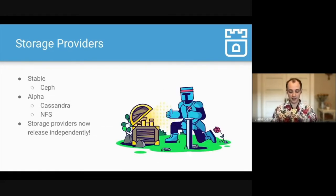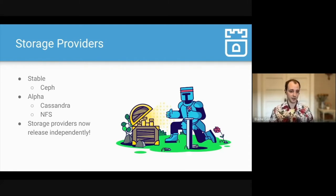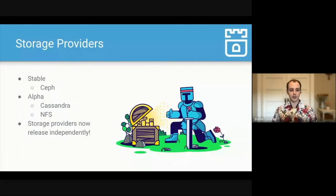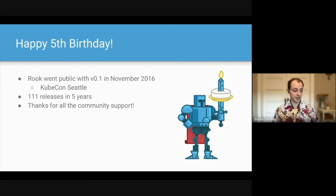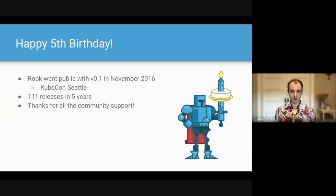Rook has three active storage providers right now. For stable, we have Ceph — hence the upcoming deep dive into Rook with Ceph. We also have NFS and Cassandra in Alpha phase. With some recent changes, we're now able to release all of these storage providers independently. Also, some exciting news: it is Rook's fifth birthday coming up. Rook went public in November 2016 at KubeCon Seattle with version 0.1, and in those five years we've had 110 more releases. So much of this is due to community support, feedback, and pull requests.